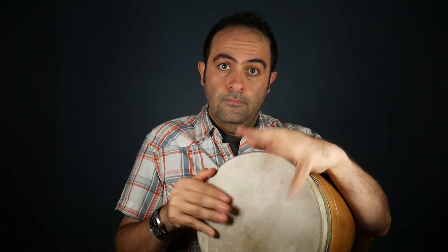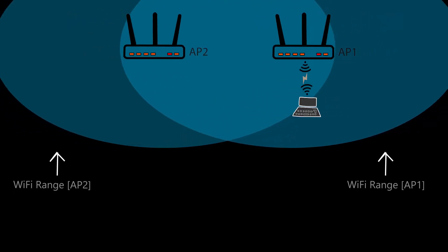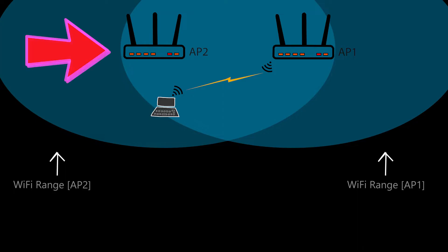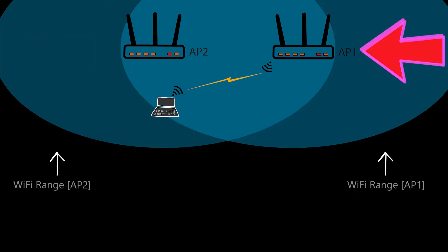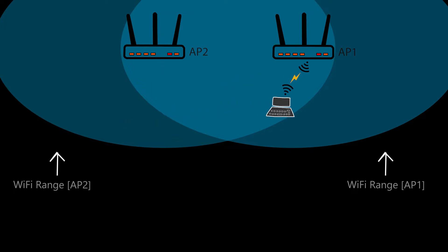If the access points are too close, then as you can see in this example, even though this client is now closer to AP2, it is still connected to AP1. This is mainly because it is still receiving a rather acceptable signal from AP1 and doesn't feel the need to switch to a different access point, even though AP2 obviously has a stronger signal. This is called a sticky client issue.